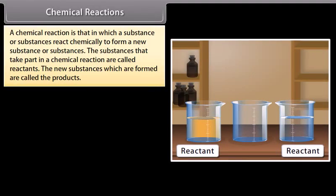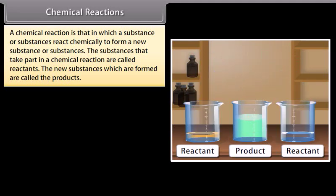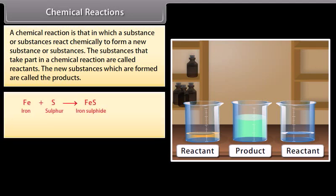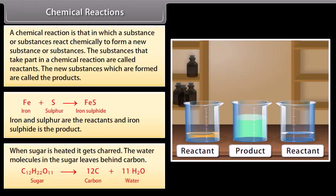A chemical reaction is one in which a substance or substances react chemically to form a new substance or substances. The substances that take part in a chemical reaction are called reactants, and the new substances formed are called products. For example, iron plus sulfur gives iron sulfide — iron and sulfur are the reactants and iron sulfide is the product. When sugar is heated, it gets charred and water molecules leave behind carbon.